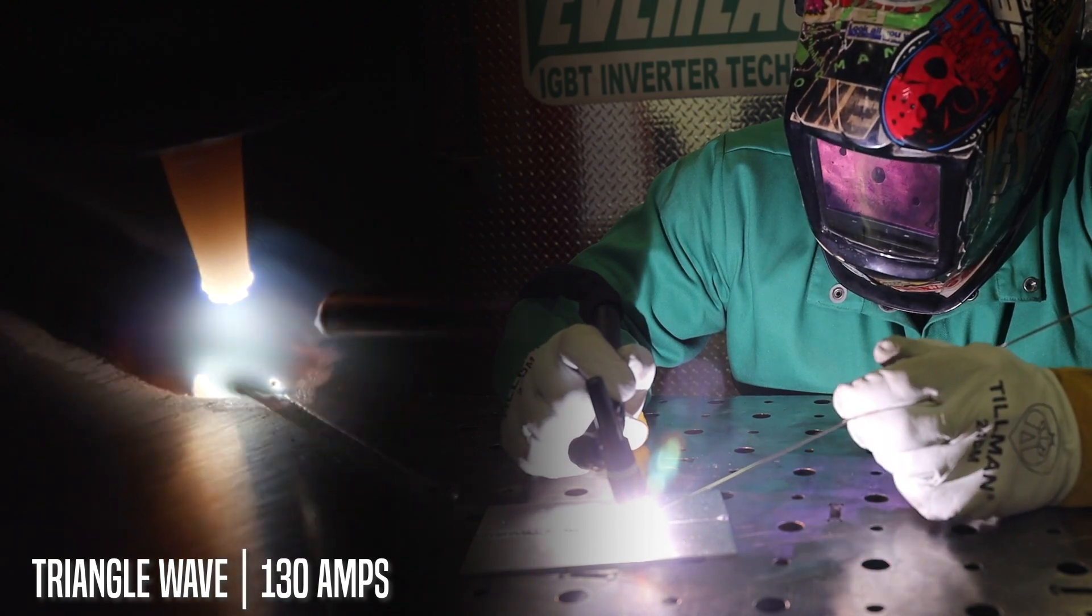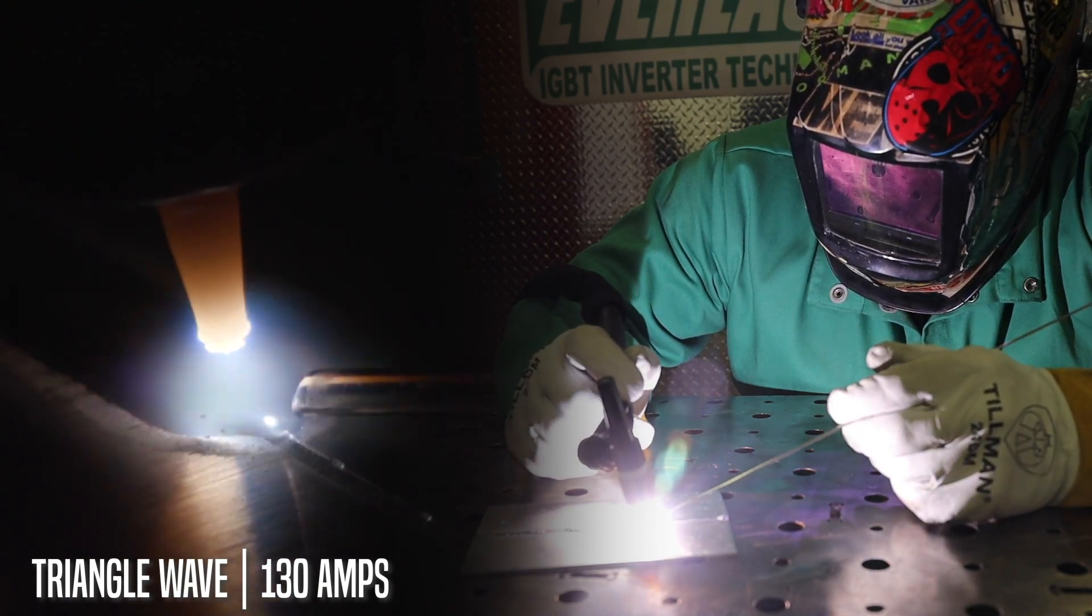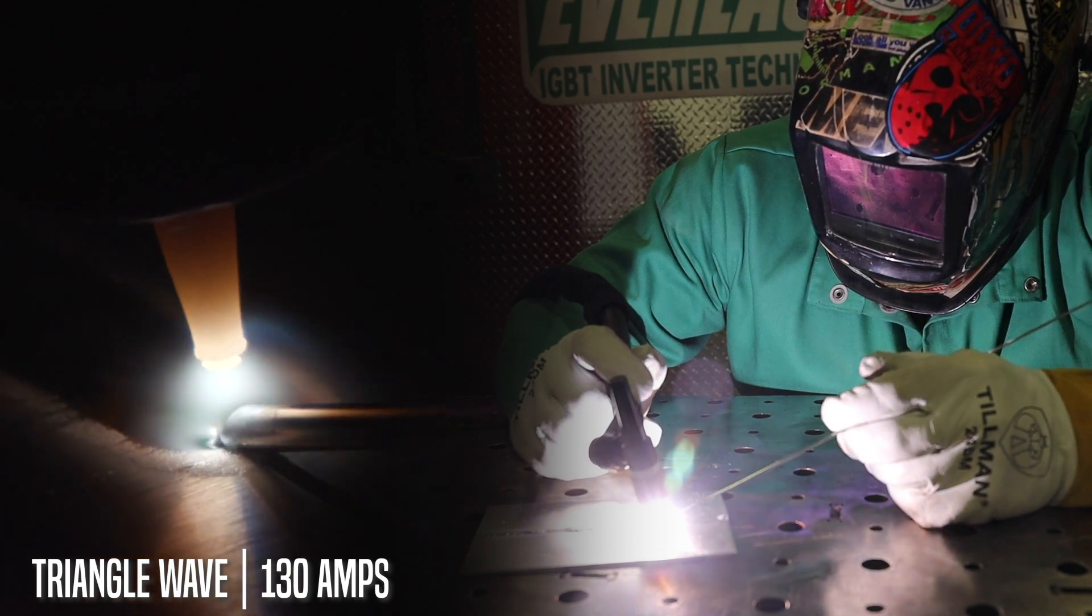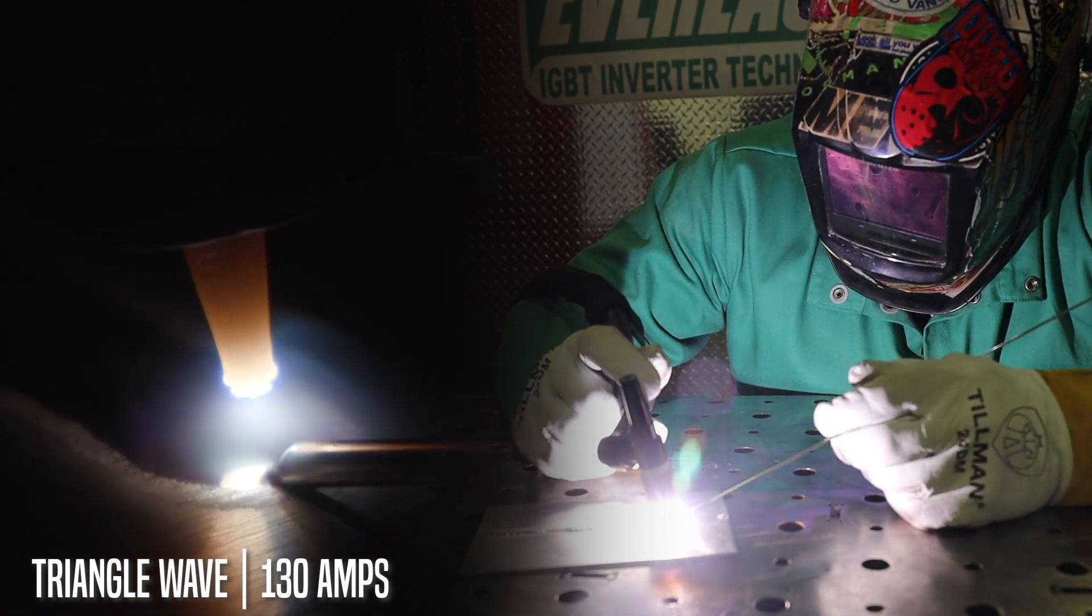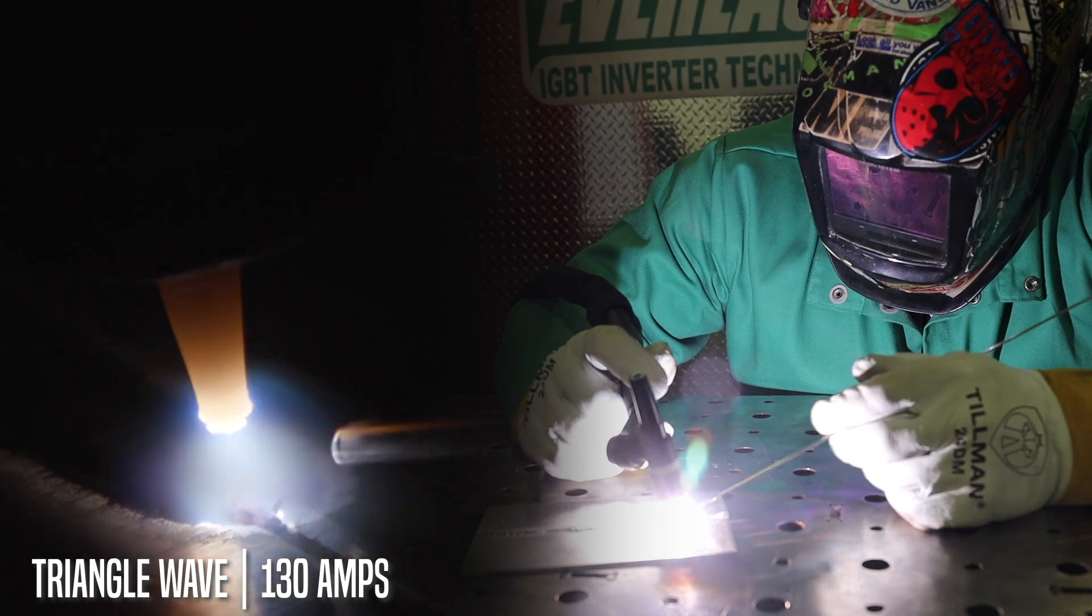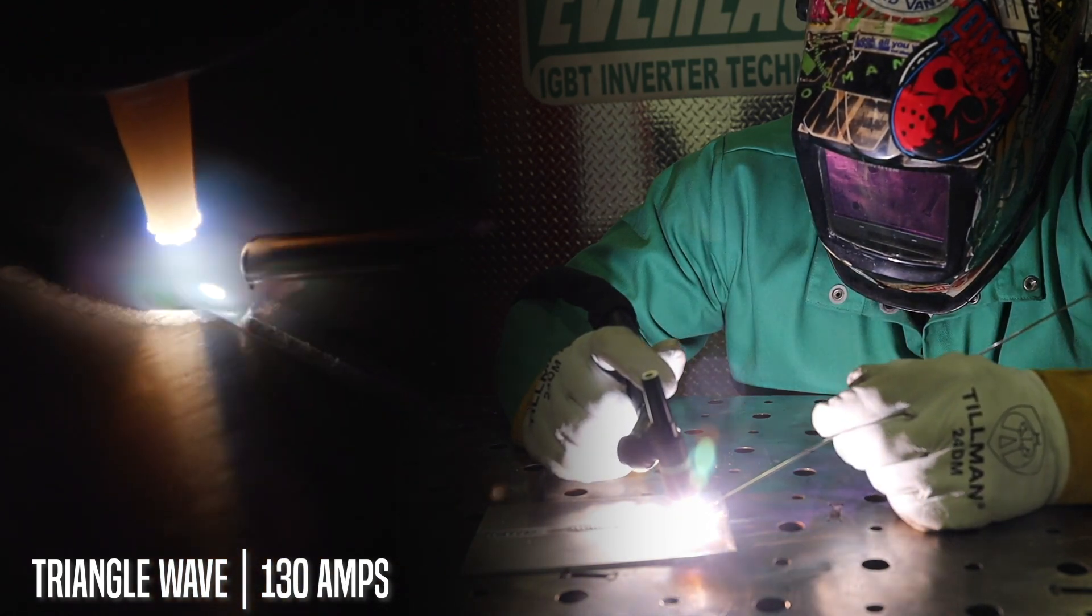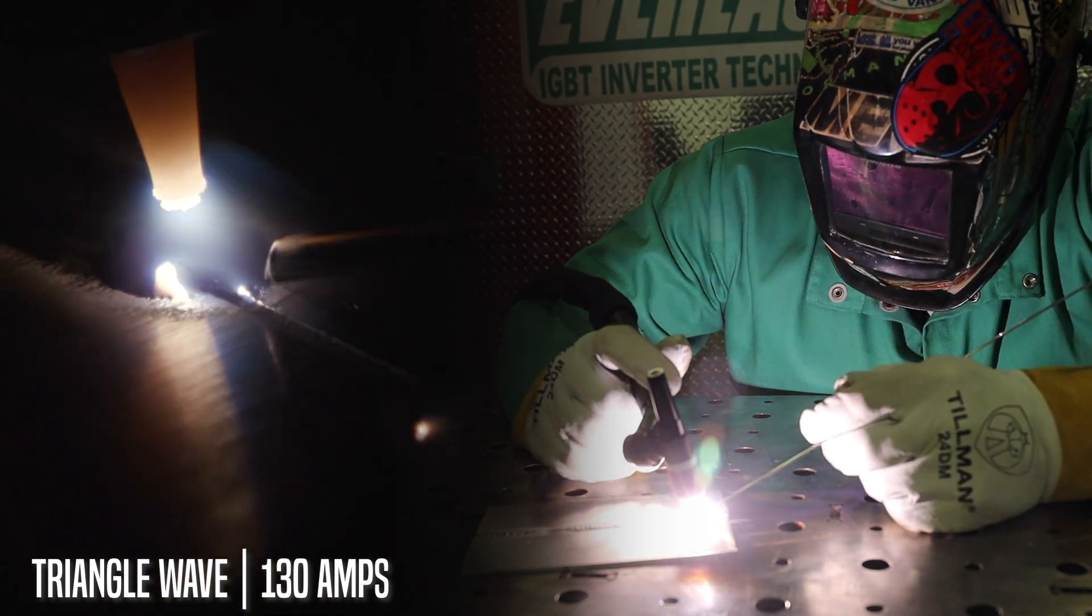And this is why people run triangle wave. It's really good for thin material. You have a lot less heat input, but still of a very stable arc. So yeah, we jumped up almost 30 amps. And now we're back to what we had with soft square and advanced square.